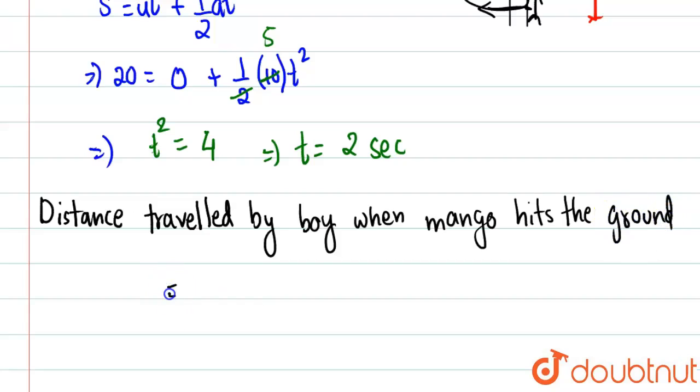Will be equal to what? It will be simply velocity of boy into time, because the boy is not accelerating in any kind. So 1.5 into 2, which will be equal to 3 meters. So the mango will fall 3 meters behind the boy. So our answer will be 3 meters. Got it?